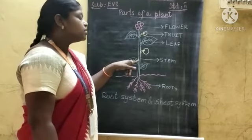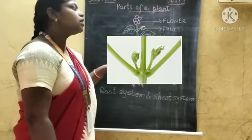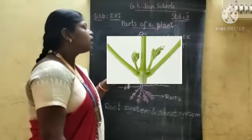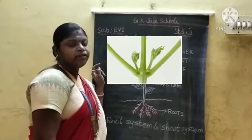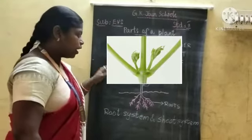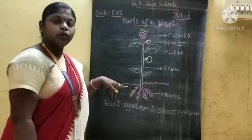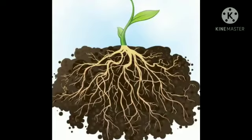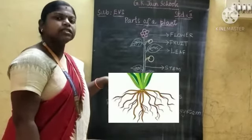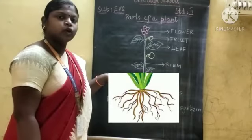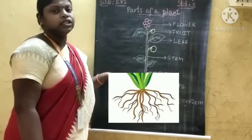Now we are going to learn about stems. The stem is a major part of the shoot system. It holds the leaves, flowers, vegetables and fruits of a plant. Now we are going to learn about the roots. Roots fix the plant into the soil and also absorb the water and nutrients present in the soil.